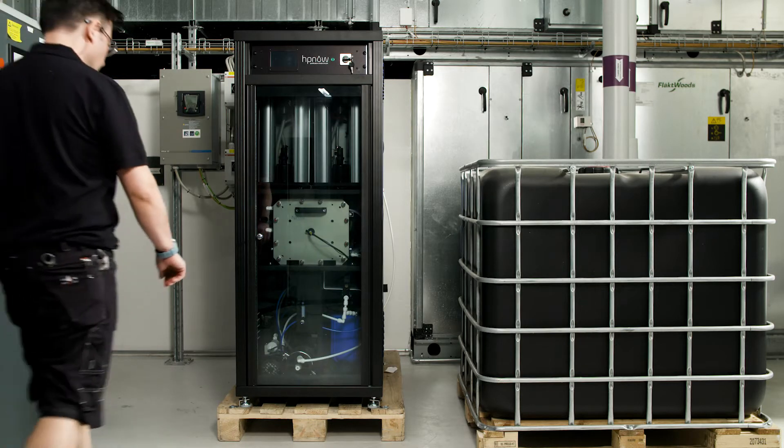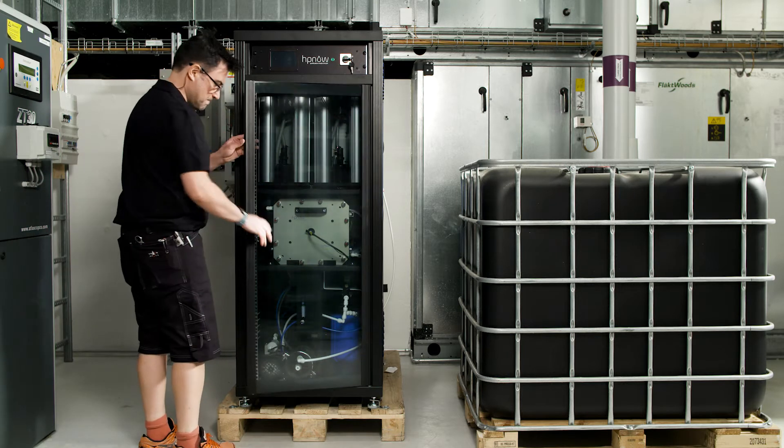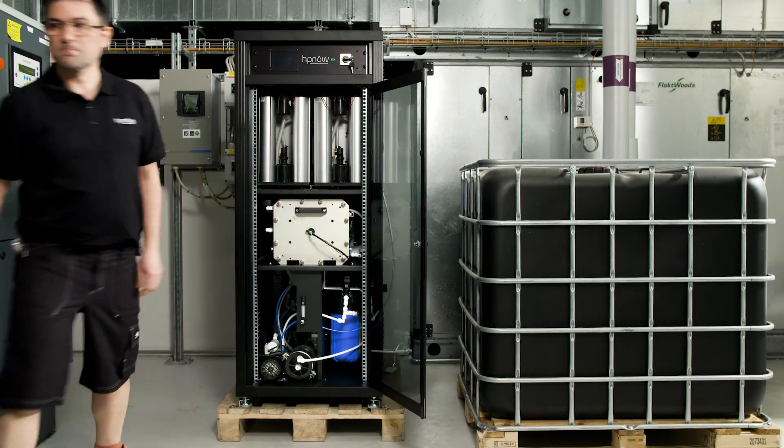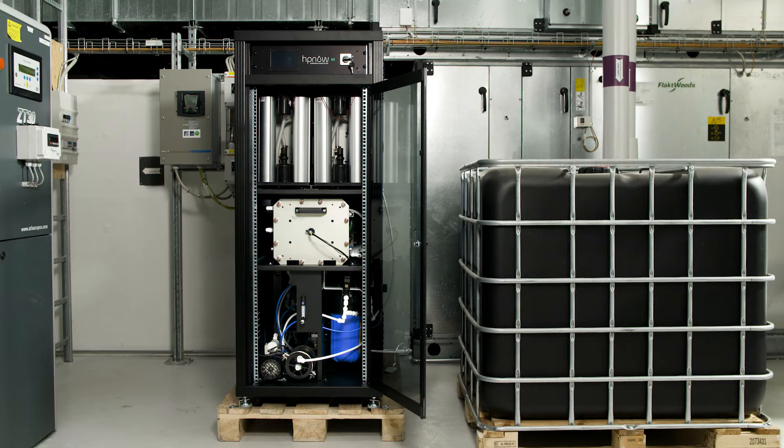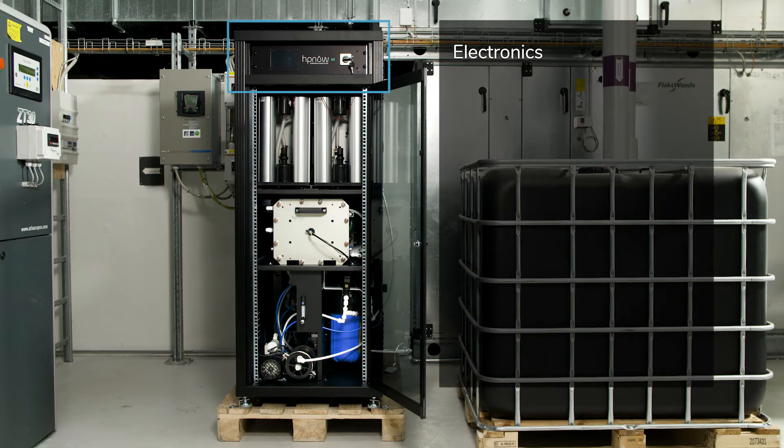Now we will go through an overview of the HP Gen system, which overall consists of four parts. In the top, an electrical drawer handles control, power supply, user interface, and IoT connectivity to HP Now.